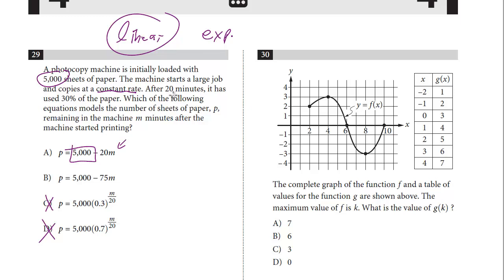We're told after 20 minutes it's used 30% of the paper. We can figure out 30% of the paper if we take 5,000 and we multiply by 0.3, and that is 1,500. We know it's 1,500 in the first 20 minutes, so all we have to do is divide this by 20. If we divide this by 20, if you use your calculator, but it looks to be 75.